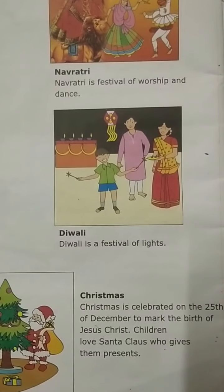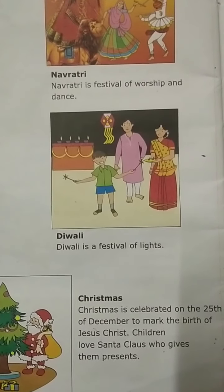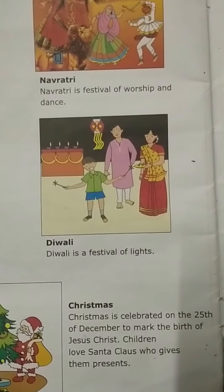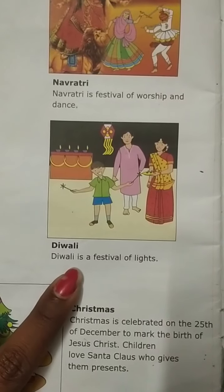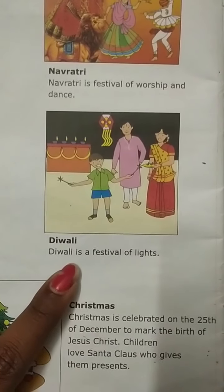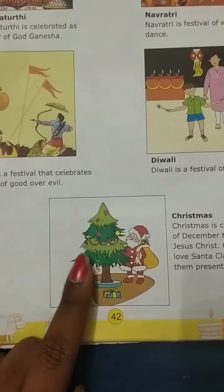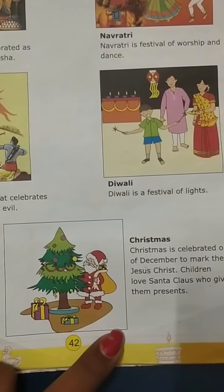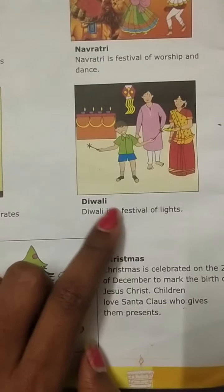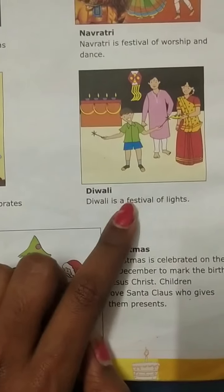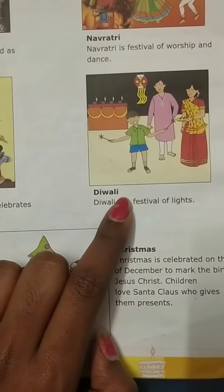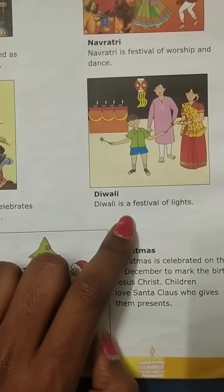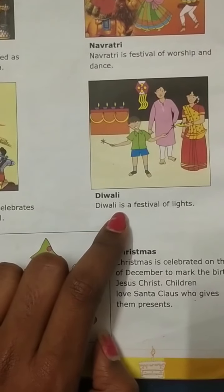Then we have Diwali. Why do we celebrate Diwali? It is also the victory over evil. We celebrate by lighting the lamps and bursting the crackers. Diwali is called the festival of lights. In Diwali, all the houses will be full of light and lamps. We had Diwali — all blasted and burned the crackers and lighted the lamps in their houses.